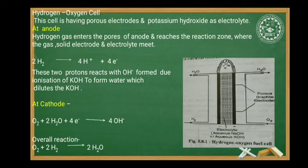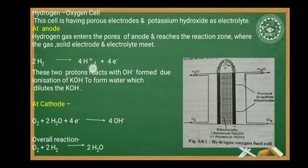Hydrogen gas enters the pores of the anode and reaches the reaction zone where the gas, solid electrode, and electrolyte meet. At the anode, oxidation occurs — hydrogen loses electrons and is converted to protons (H⁺).